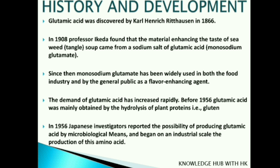The demand for glutamic acid increased rapidly. Before 1956, glutamic acid was mainly prepared by hydrolysis of plant protein — specifically gluten. In 1956, a Japanese investigator reported the possibility of producing glutamic acid by microbiological means using microorganisms, and industrial-scale production of this amino acid began.